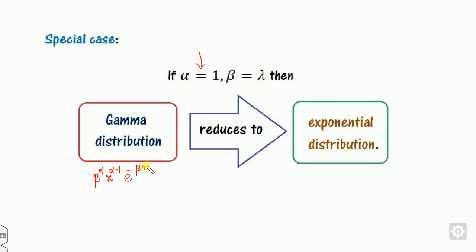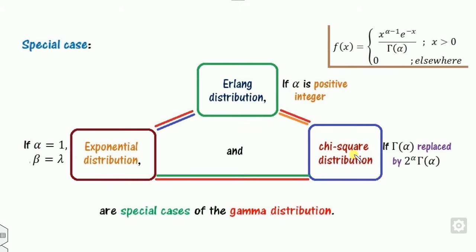From the distribution function, if we set alpha equal to 1 and beta equal to lambda, we get x to the power 0 equals 1, and gamma of 1 equals 1, so this reduces to the exponential distribution. Exponential distribution is therefore a special case of the gamma distribution. If alpha is a positive integer, the gamma distribution becomes the Erlang distribution.